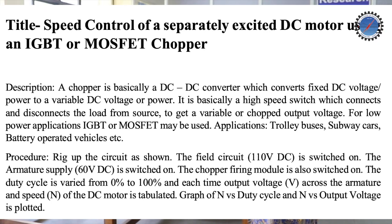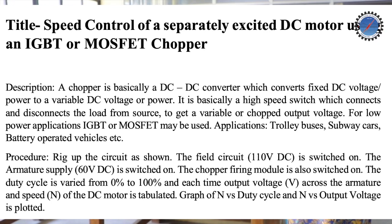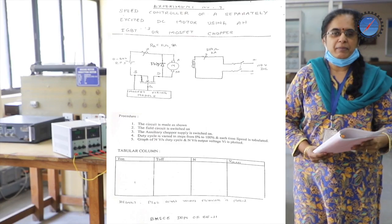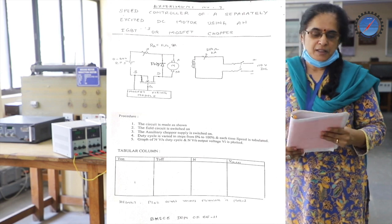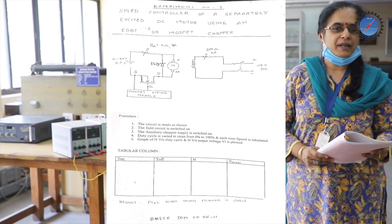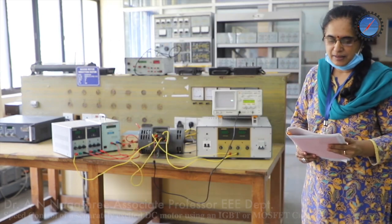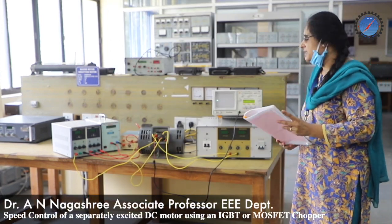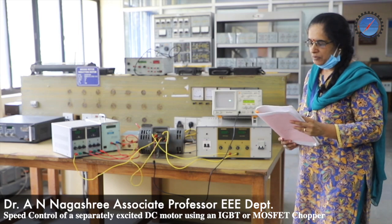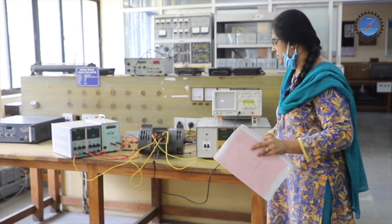We will be speaking about the next experiment of our 6th semester car electronics lab. The next experiment that we will be doing here is speed control of separately excited DC motor using IGBT or MOSFET choppers.